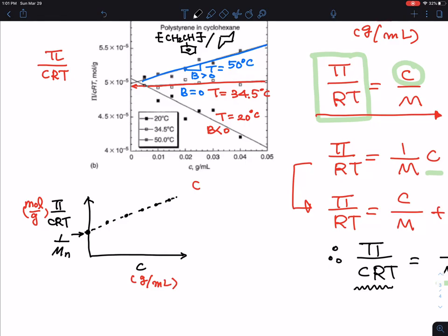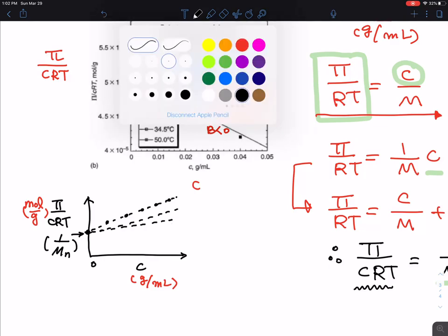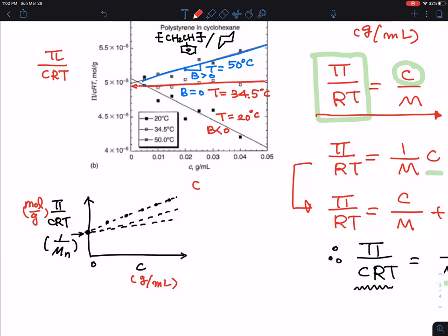Later I'm going to show you that 1/M is actually 1/MN, number average molecular weight, for polydisperse samples. As you lower your temperature, the slope gets lower and lower. At some point at this interesting temperature, this is the case when your B value is 0.